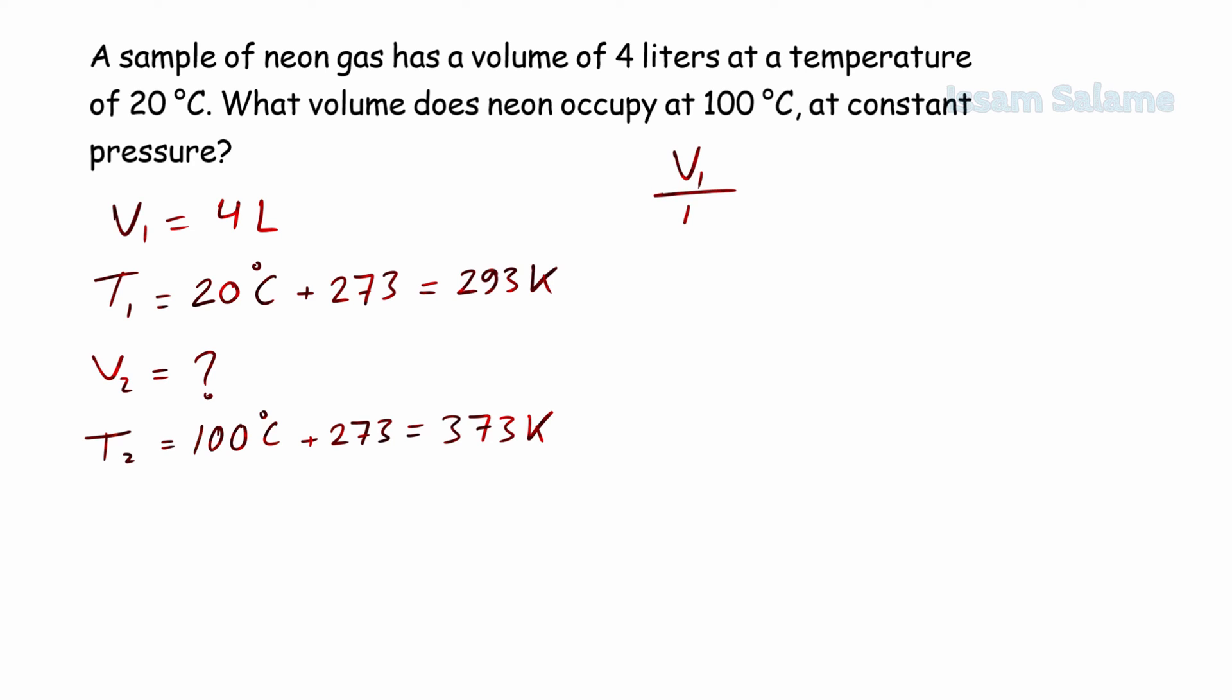Then we write Charles's law, V1 over T1 equals V2 over T2. We do cross multiplication to find V2 equals V1 times T2 over T1.